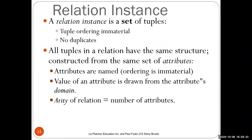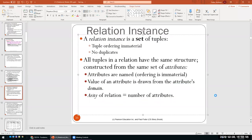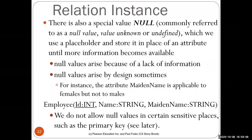When inserting into databases, you can specify values without naming attributes, and the system assumes they are in the order those attributes appear in the schema. Every attribute will have a value from the attribute's domain. The arity of a relation is the number of attributes it has. There is also a special value called null — the null value or unknown/undefined — which is used as a placeholder when we don't have a value for a specific attribute in a specific tuple.